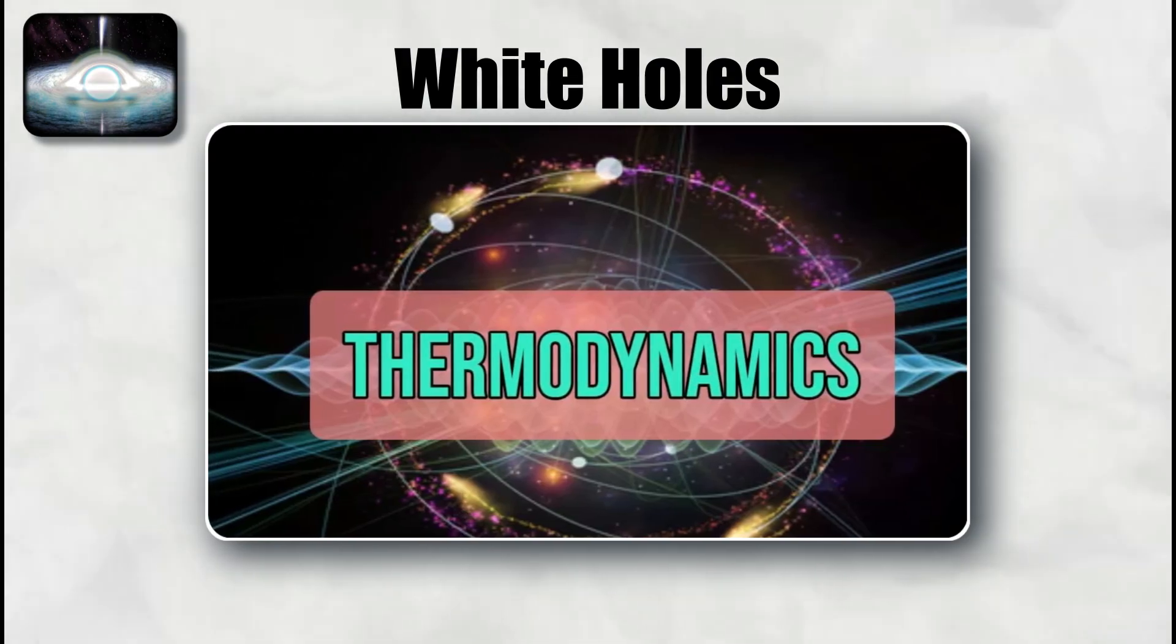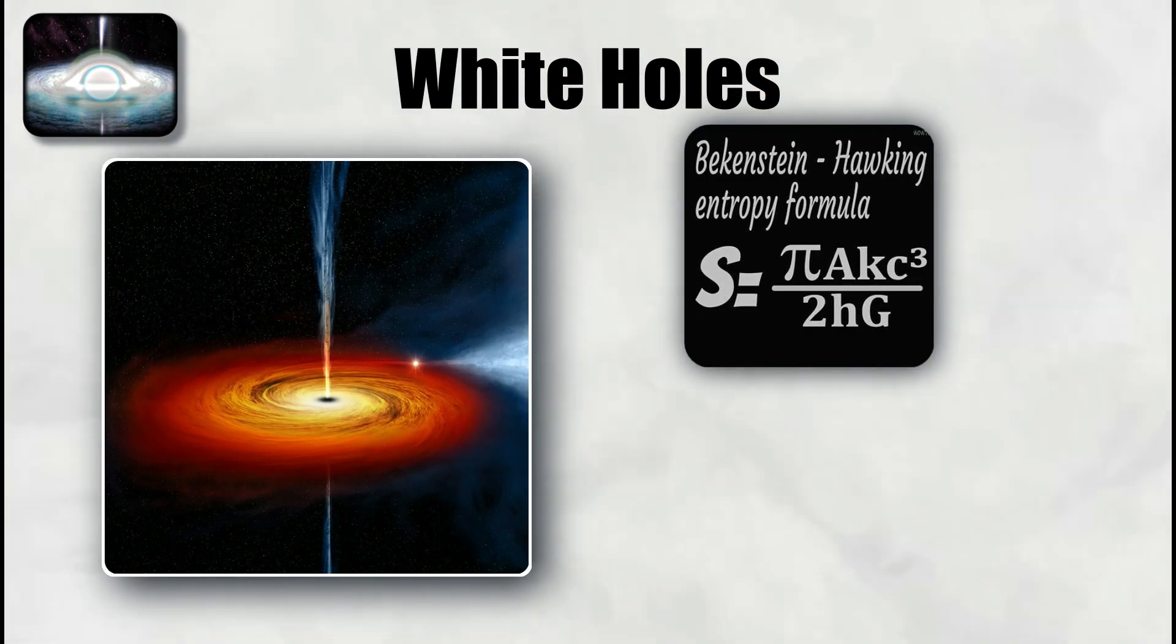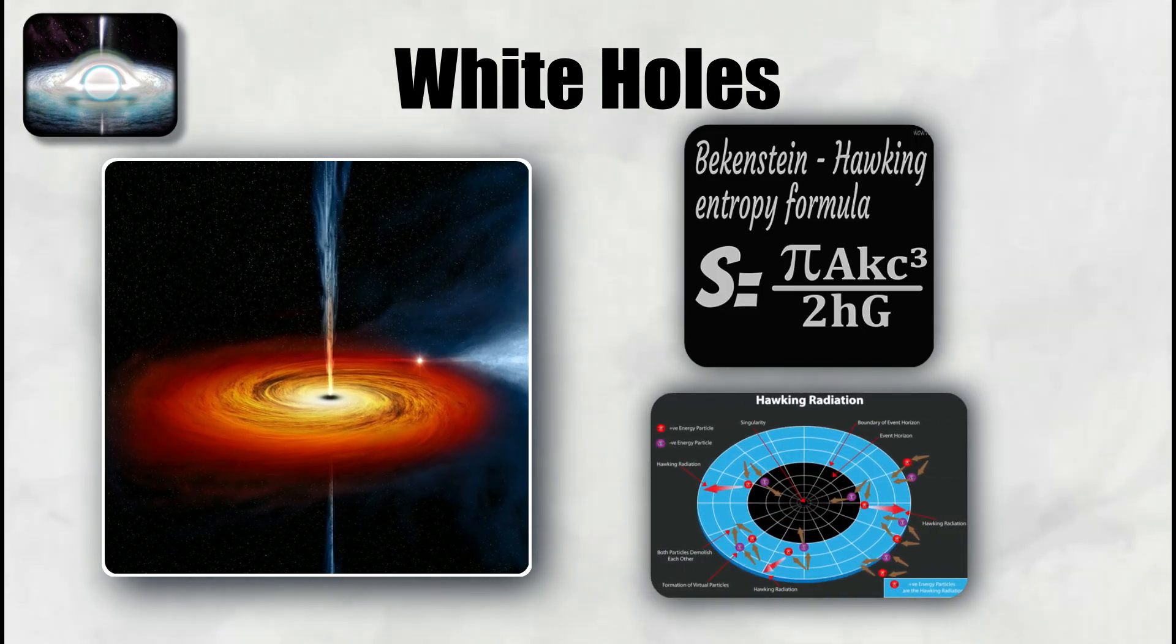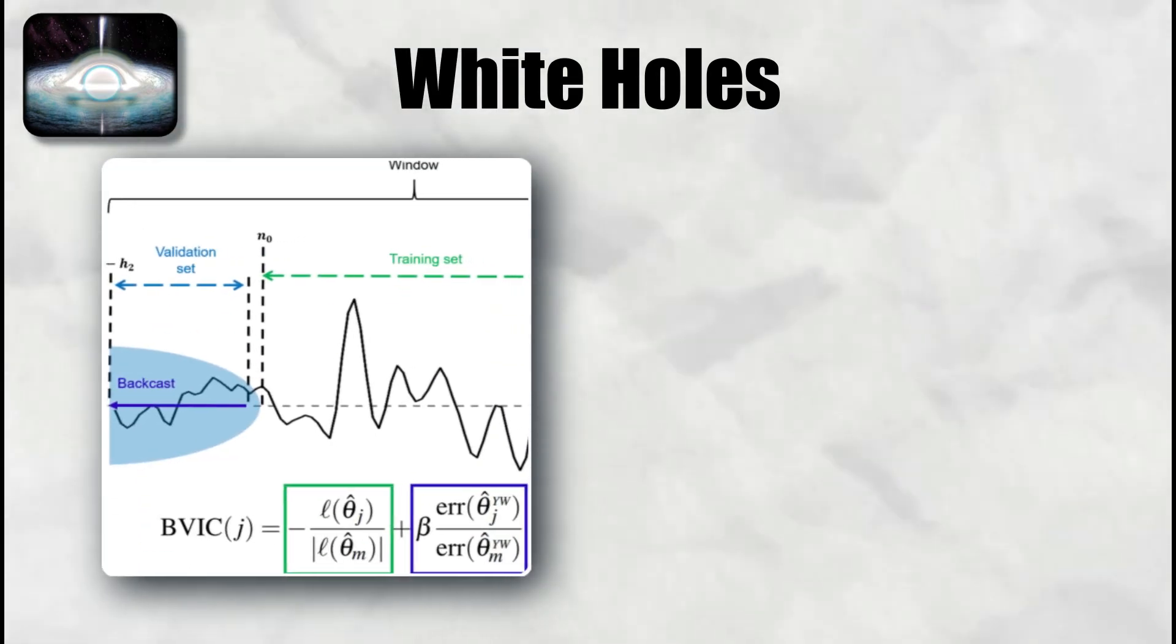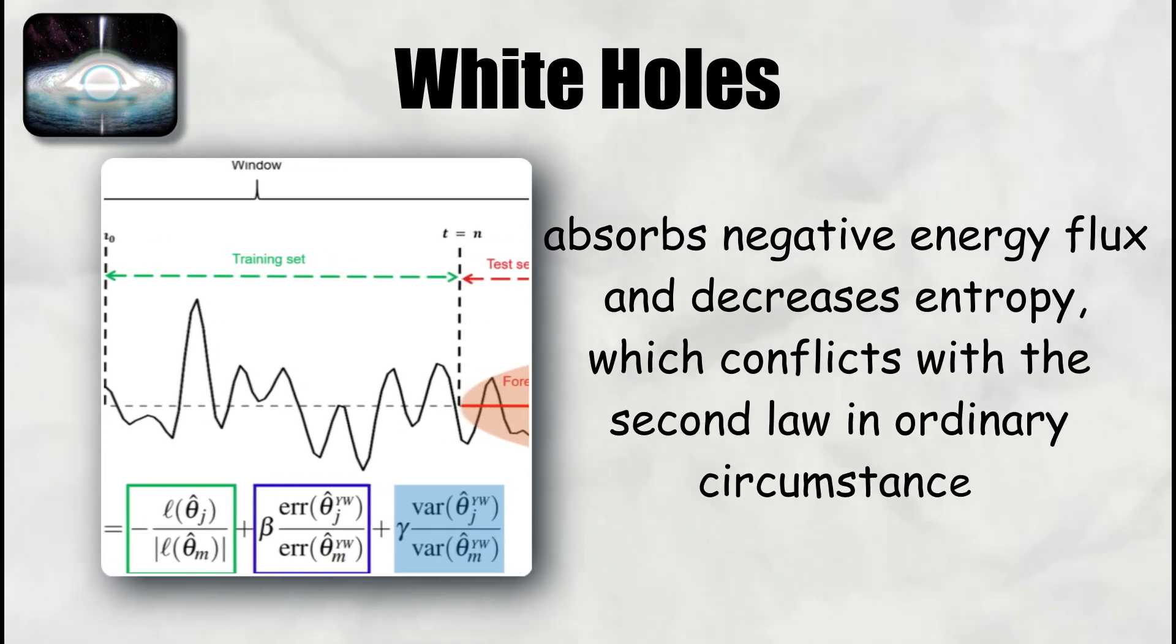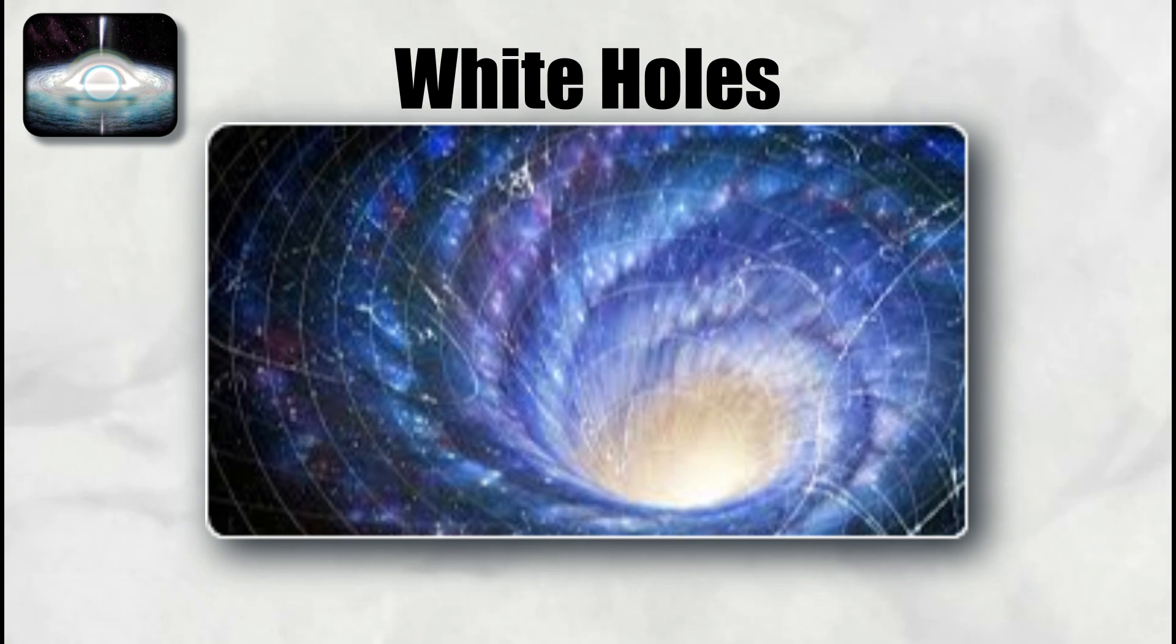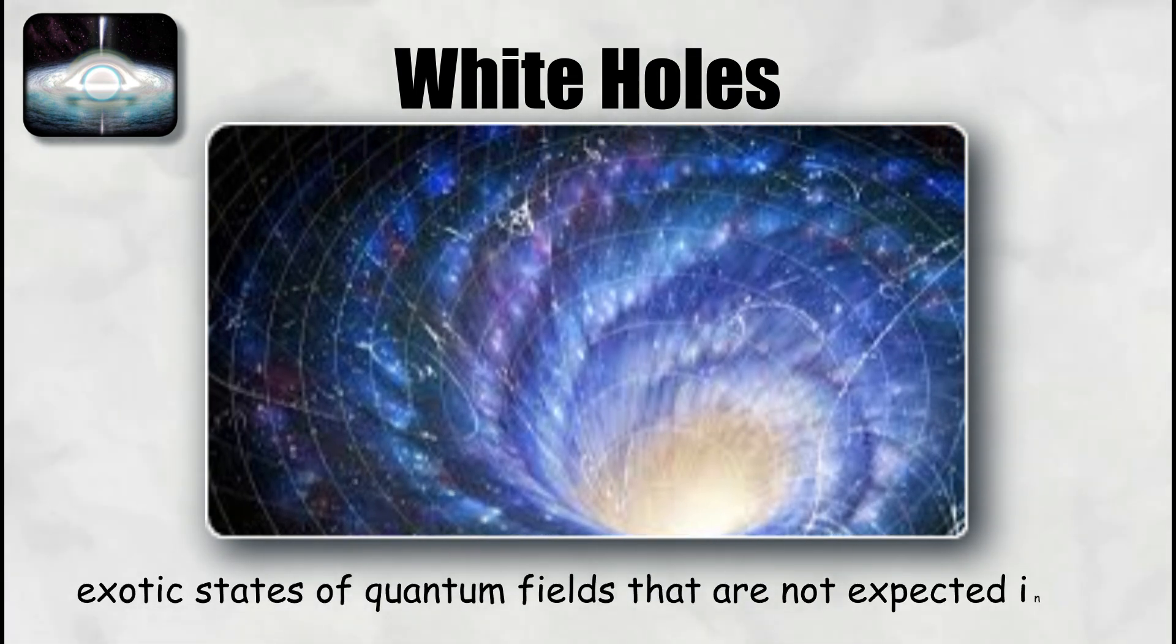Thermodynamics raises a further problem. Black holes carry Bekenstein-Hawking entropy proportional to horizon area and emit Hawking radiation, which is consistent with the second law of thermodynamics. The naive time reverse would be an object that absorbs negative energy flux and decreases entropy, which conflicts with the second law in ordinary circumstances.